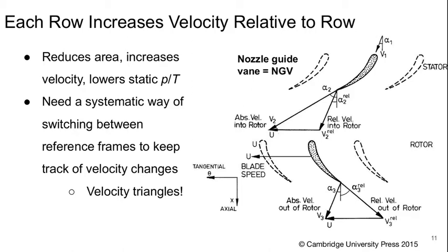Each row reduces the area, increases the velocity, and lowers the static pressure and temperature. To keep track of this, we need a systematic way of switching between reference frames, and this is where we use velocity triangles. These were introduced briefly in Aero Fundamentals last year, but we're going to talk a lot more about them today.